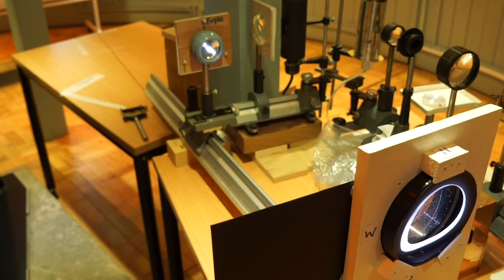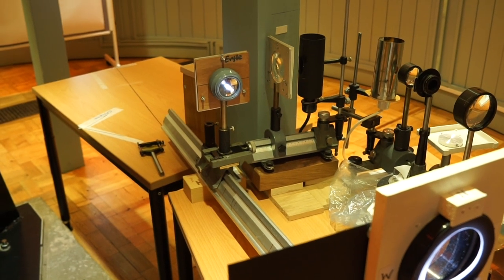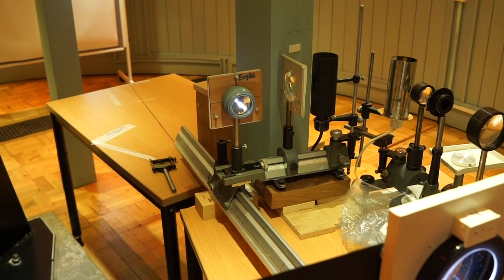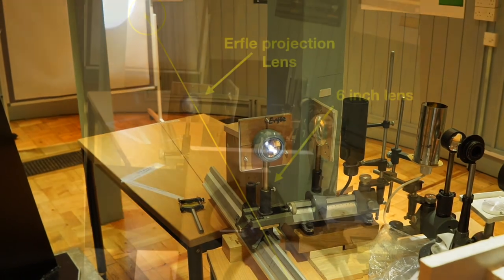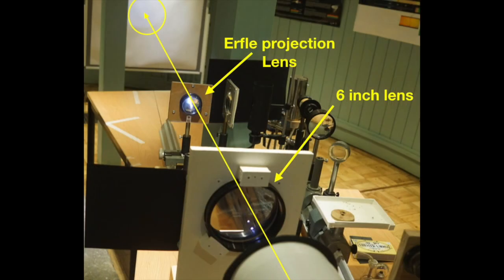Instead of using the lens as an eyepiece, we can use it as a projection device and form an image of the sun on the screen in the background.